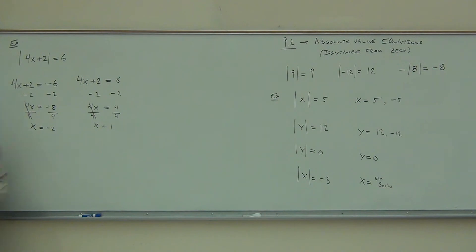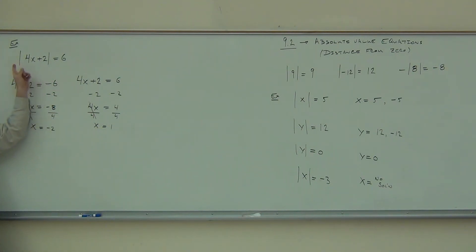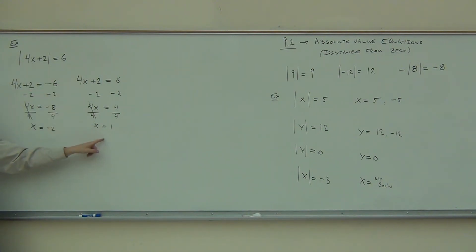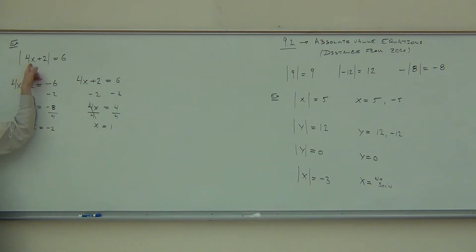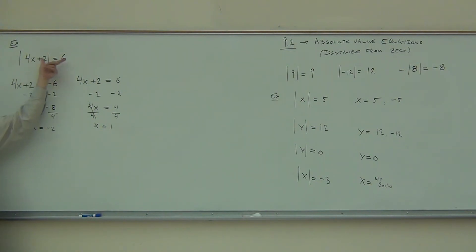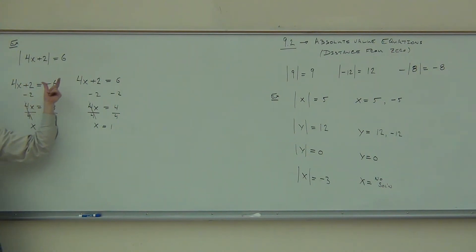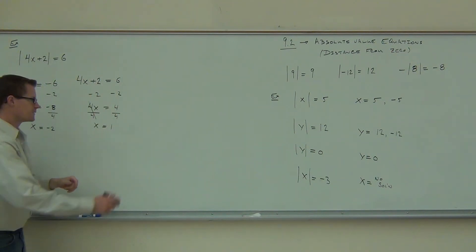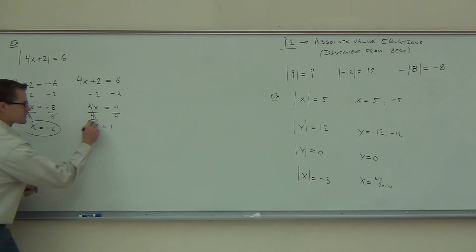Let's just go ahead and check this to make sure. Plug in x equals 1: 4 times 1 is 4, plus 2 is 6, absolute value of 6 is 6. Yes, that's a solution. Now try x equals negative 2: 4 times negative 2 is negative 8, plus 2 is negative 6. Absolute value of negative 6 is 6. That's what we said — if the inside equals negative 6, the absolute value will make it positive. So we get two solutions out of this.